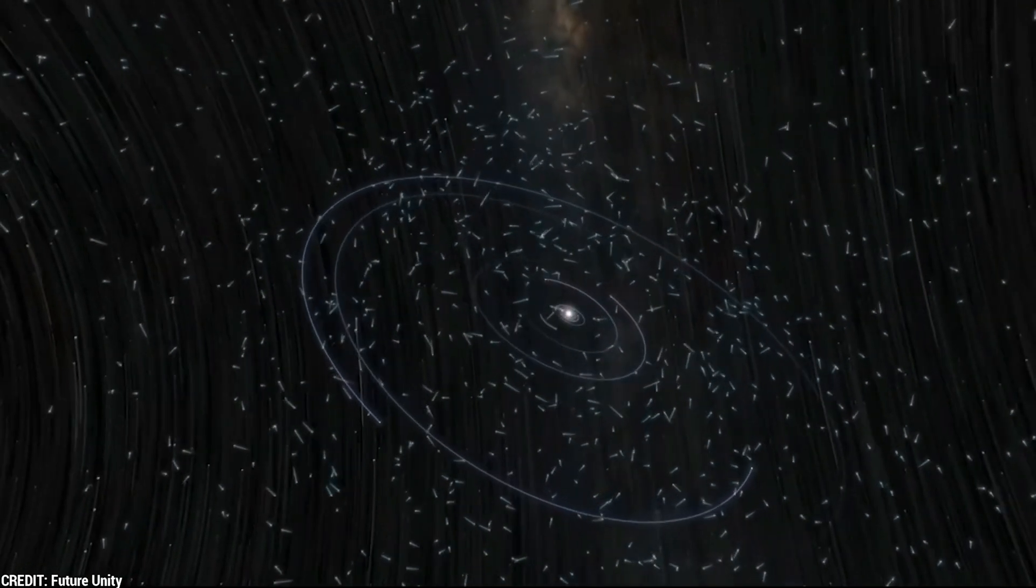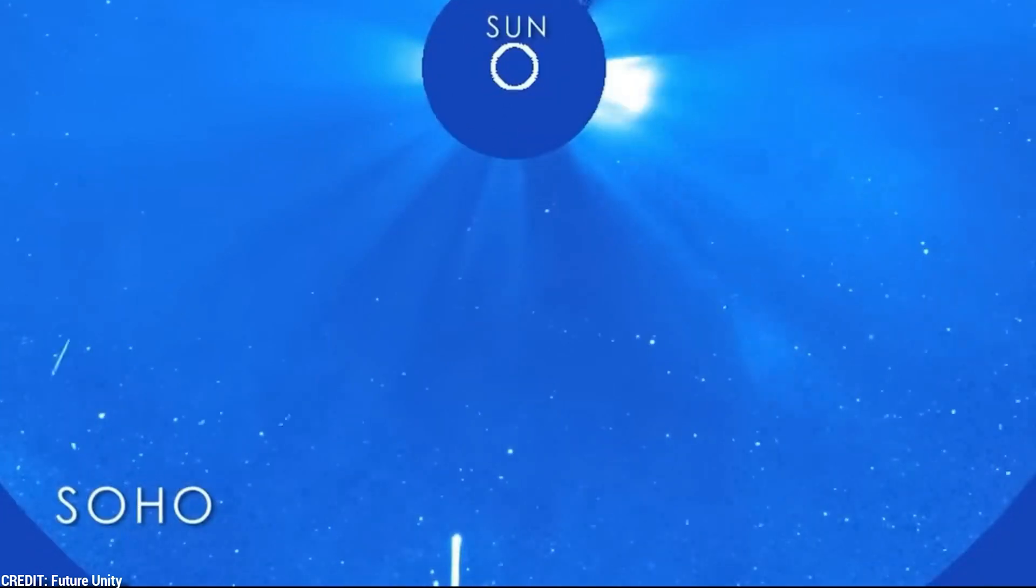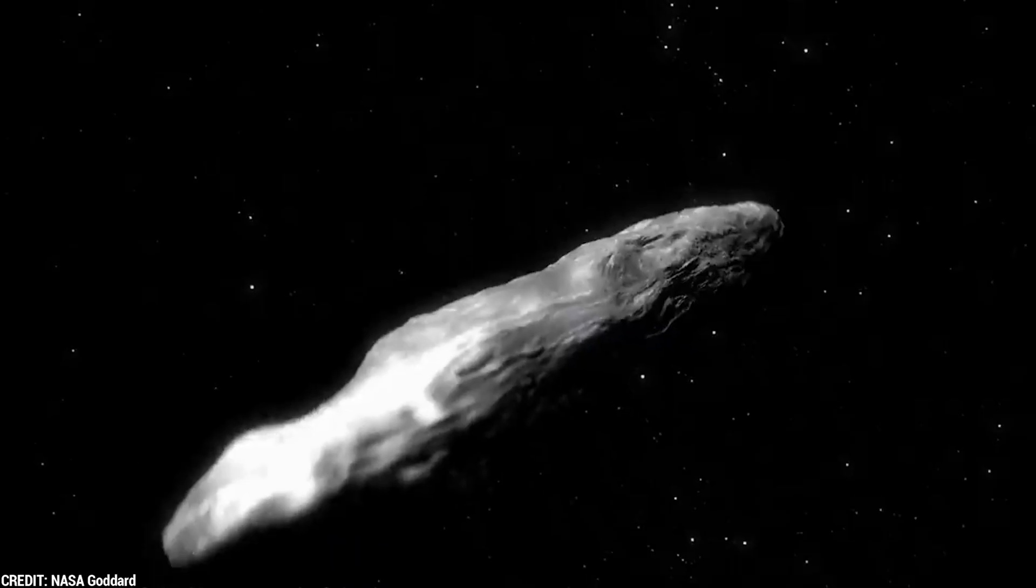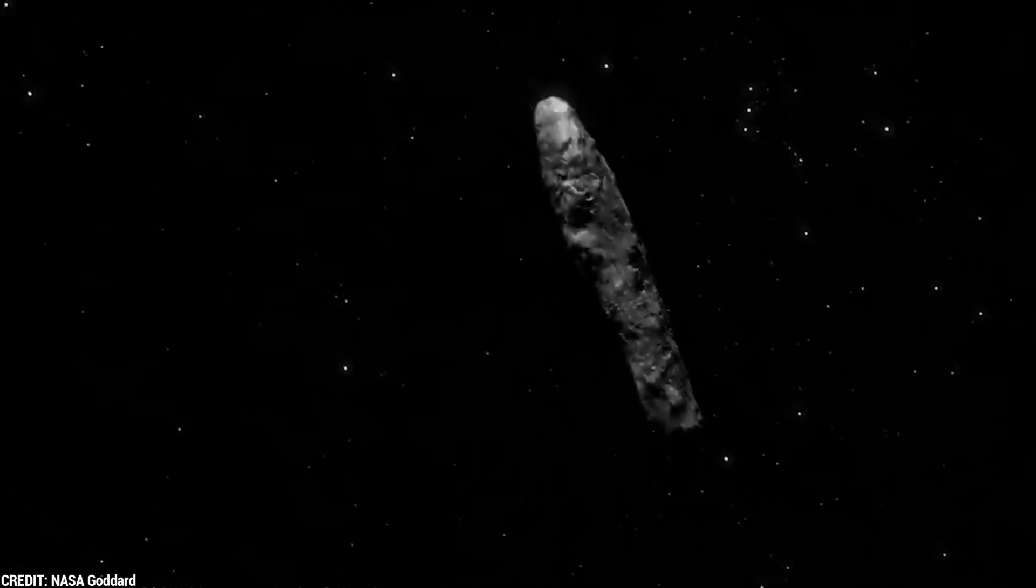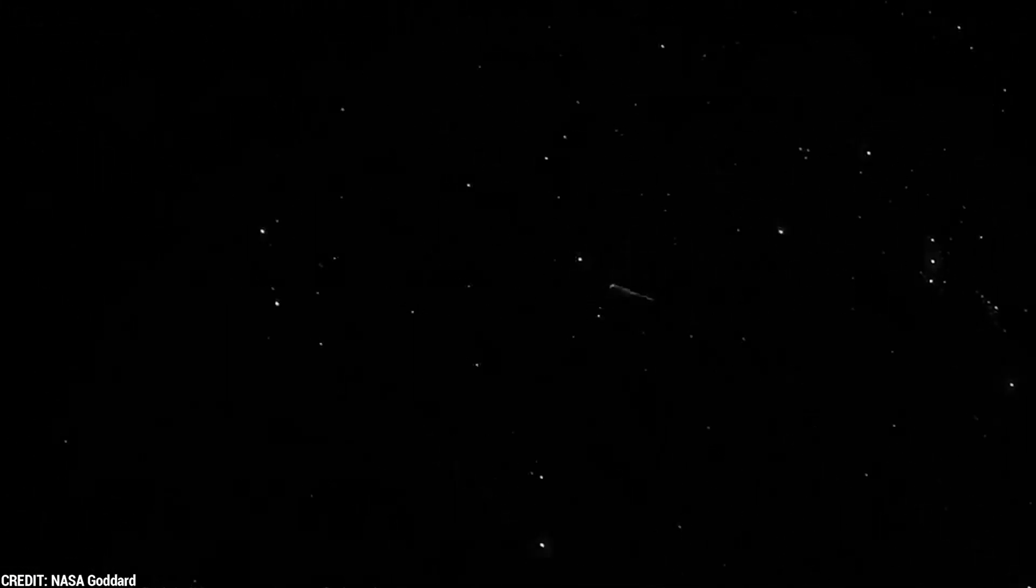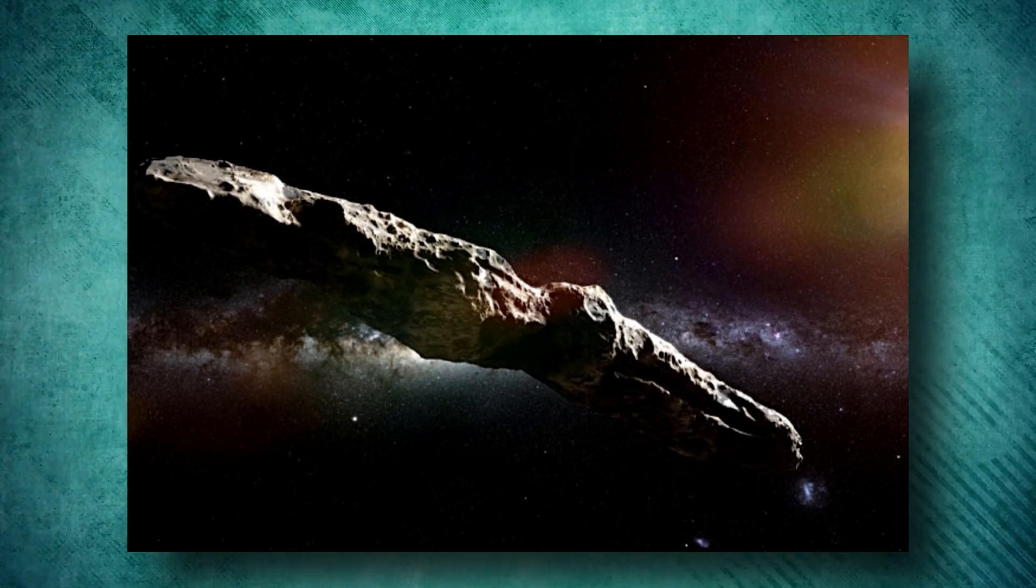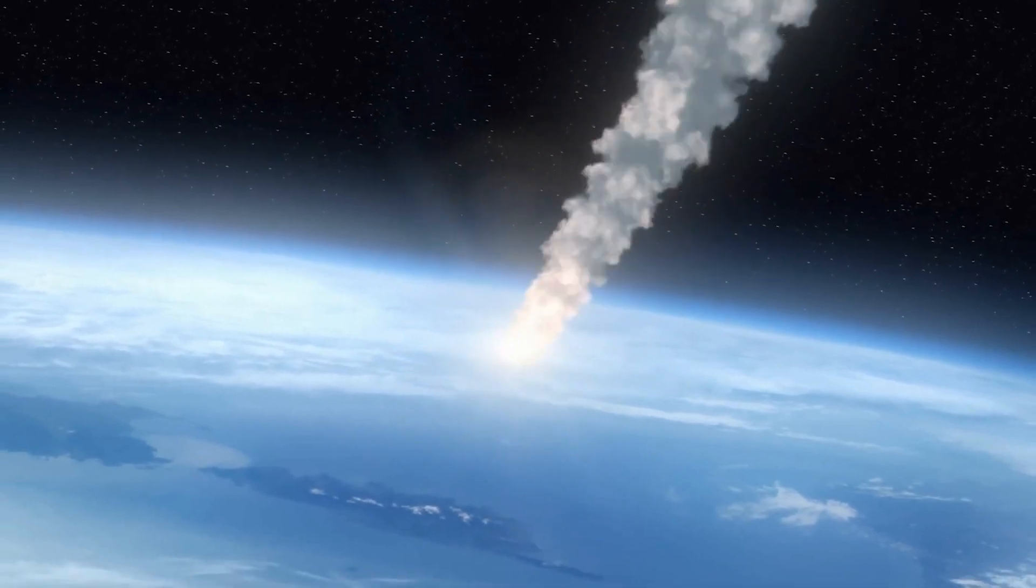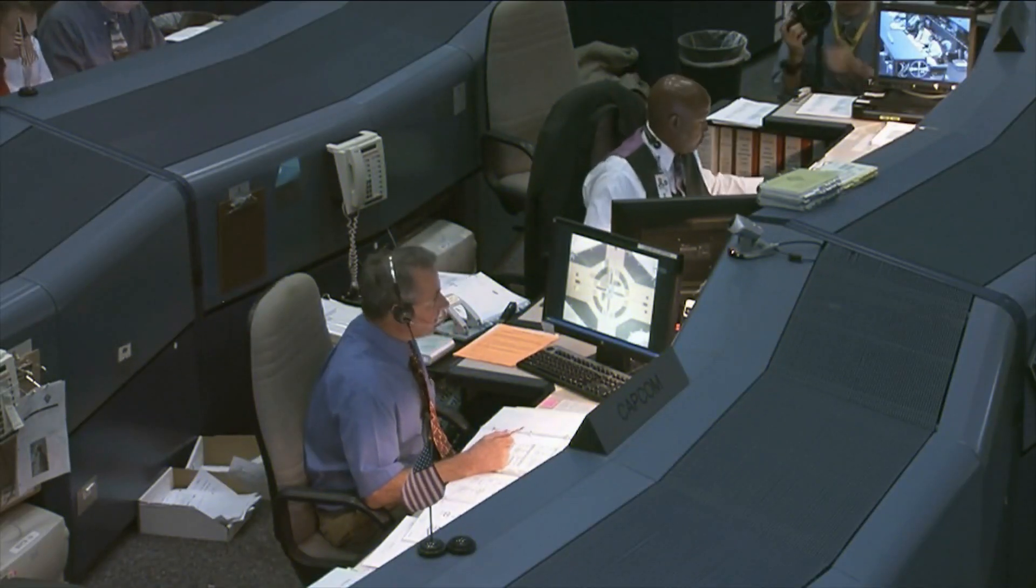Oumuamua, as astronomers named it, was quite peculiar because it had characteristics of an asteroid and a comet. Normally, gravitational interactions push away minor objects like comets and asteroids during the formation of planets around stars. When Oumuamua was first discovered, it was classified as a comet. However, astronomers started to doubt this classification because it lacked the typical tail of gas and dust that comets usually have when heated by the sun. This led to different speculations among scientists.